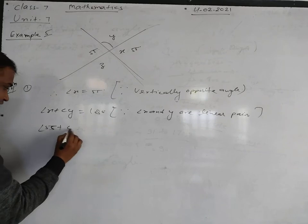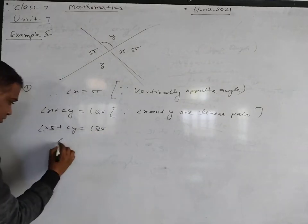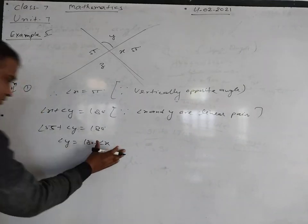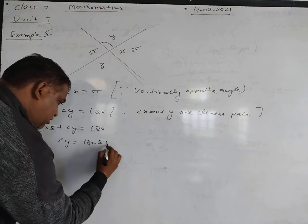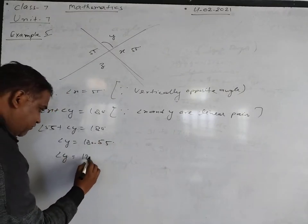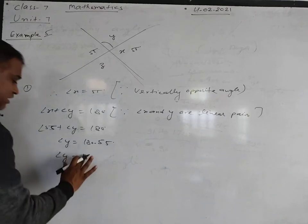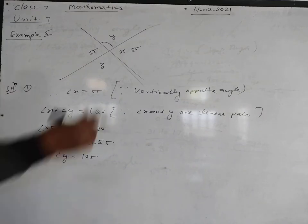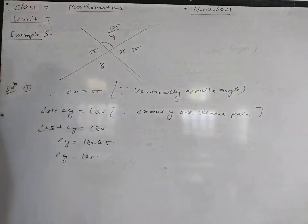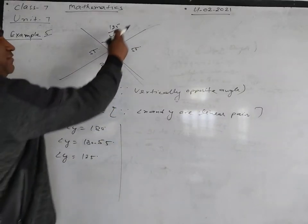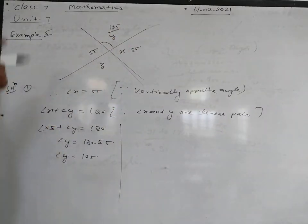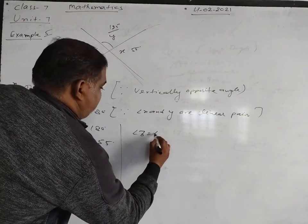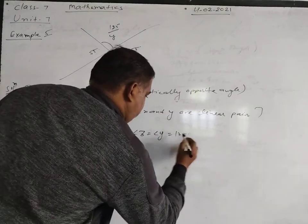So 55 degrees plus angle y is equal to 180 degrees, or angle y is equal to 180 degrees minus 55 degrees. So angle y is equal to 125 degrees. Now angle y and z are vertically opposite angles, so angle z is equal to angle y, which is equal to 125 degrees.